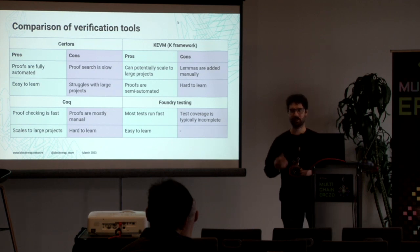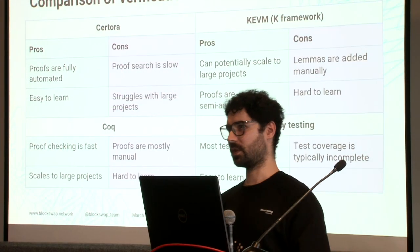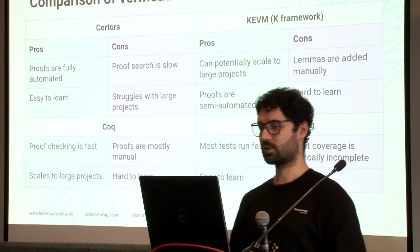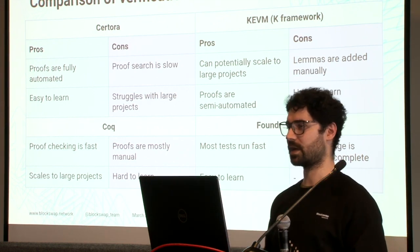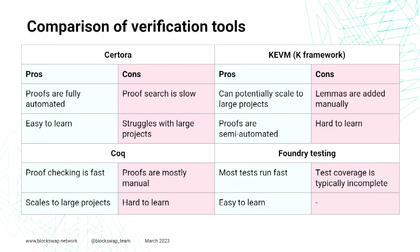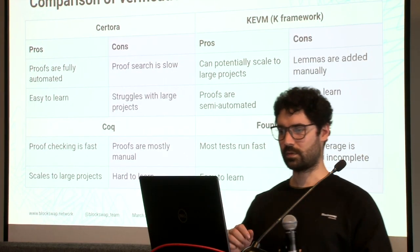An alternative is the K-Framework, which Gregor talked about. It can potentially scale to large projects because we can add lemmas to improve verification times. If proofs are going too slow, we can add additional lemmas to make them faster. This makes proofs semi-automatic but still highly automated. It is hard to learn, but fairly approachable — even for a regular developer who is willing to spend time learning it.